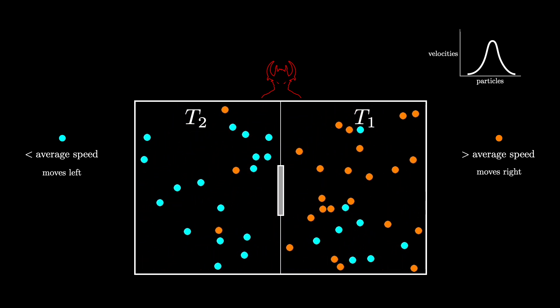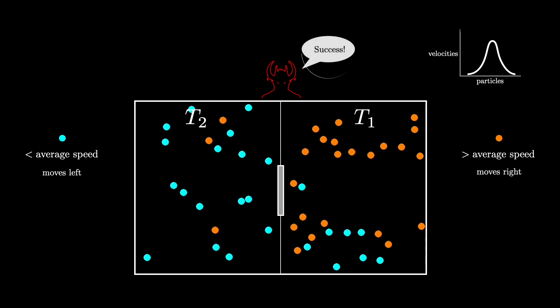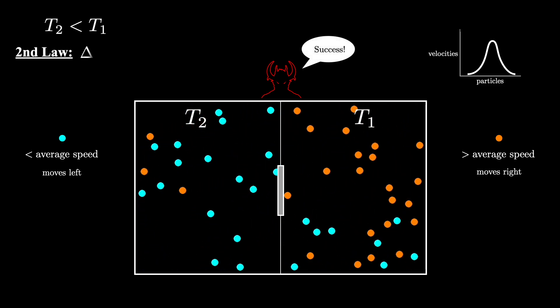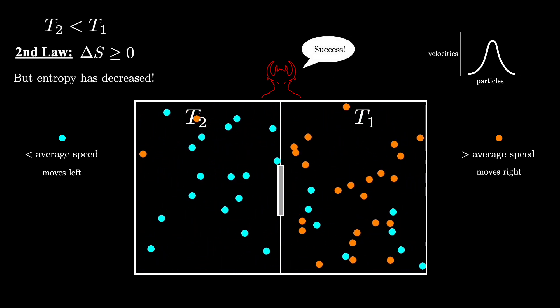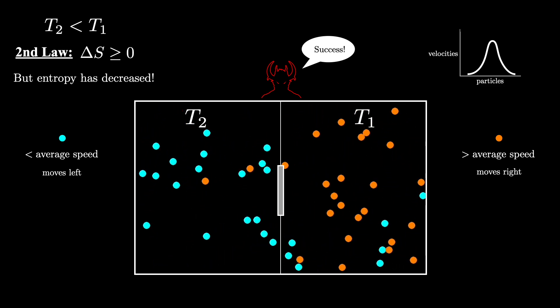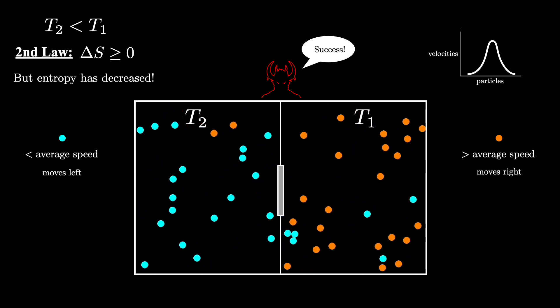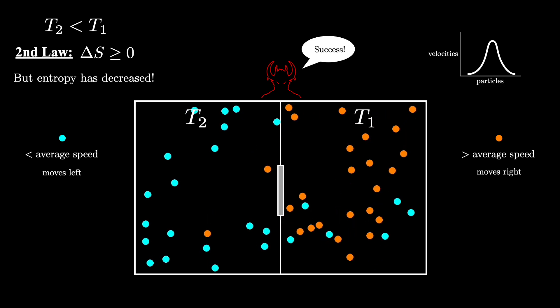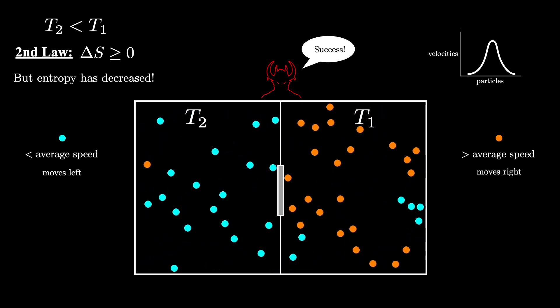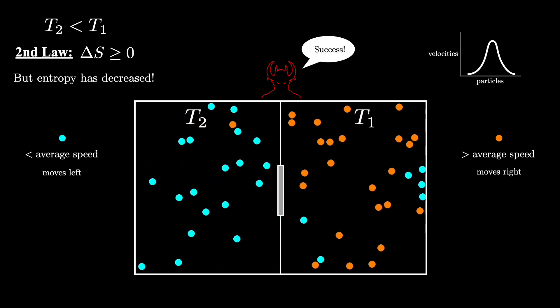The demon, therefore, has successfully decreased the entropy of the box, an apparent violation of the second law of thermodynamics. Now, as I mentioned earlier, Maxwell created this thought experiment because he believed the second law was not really universal. He thought that this clearly showed the second law could be violated.